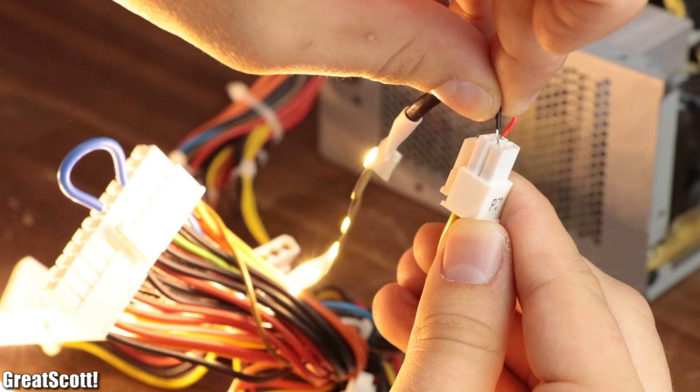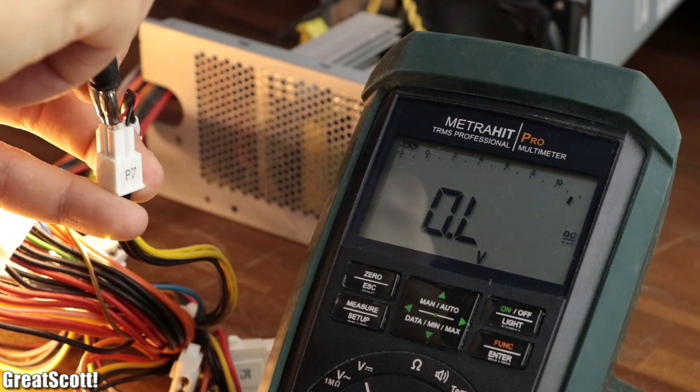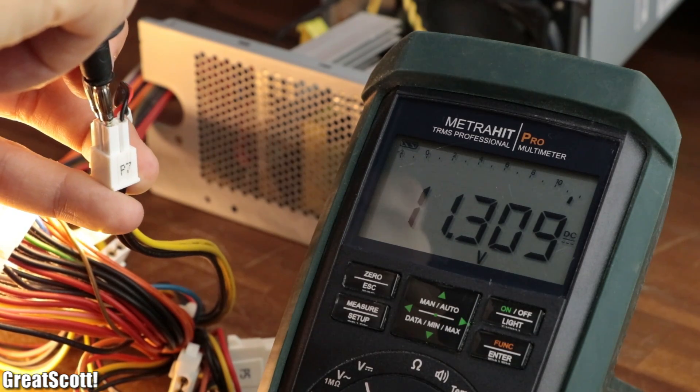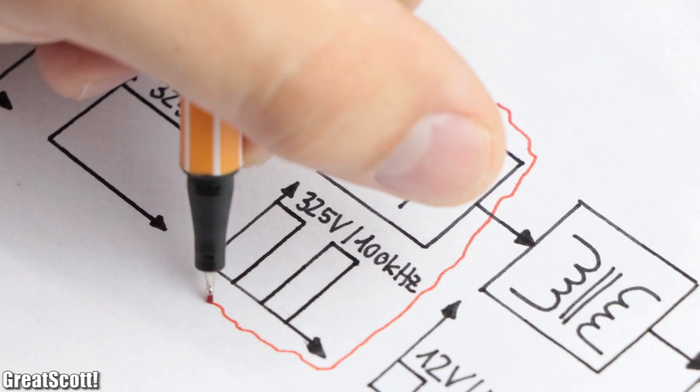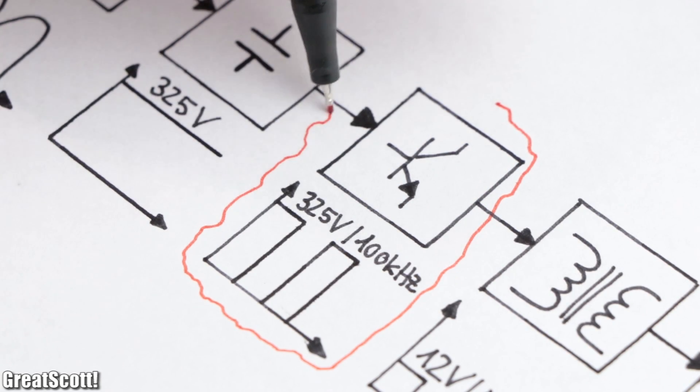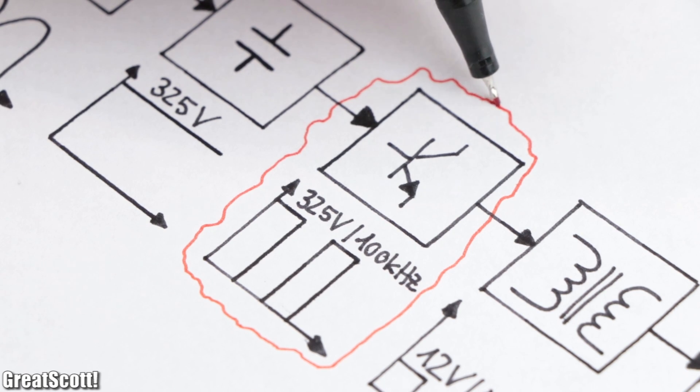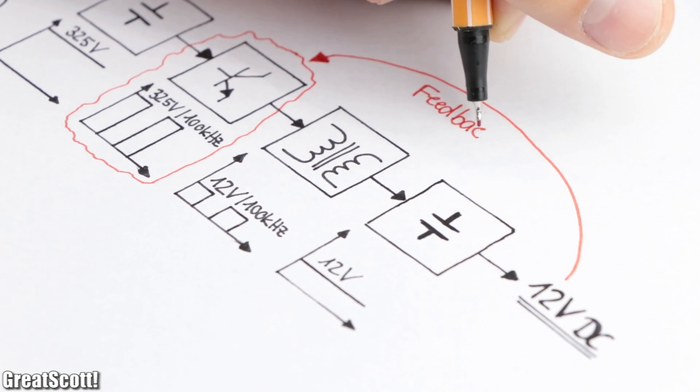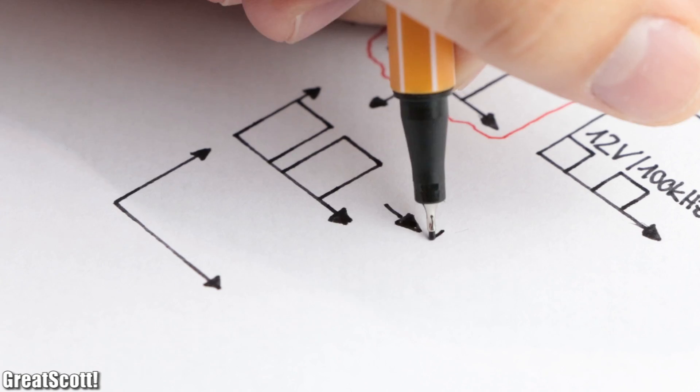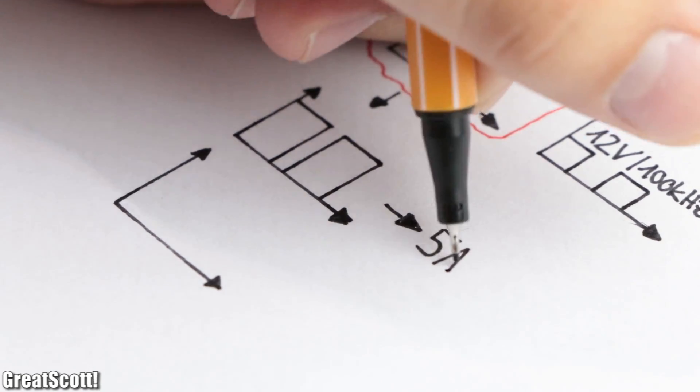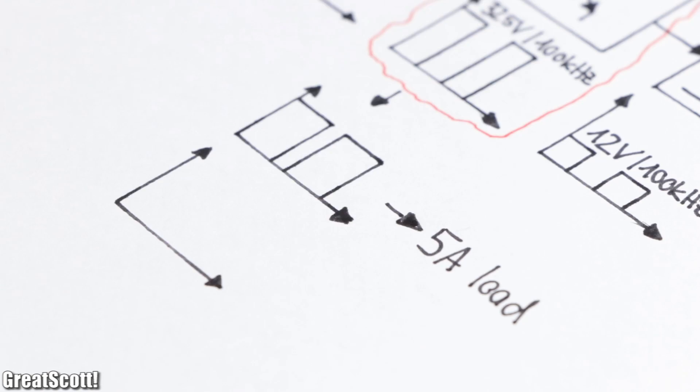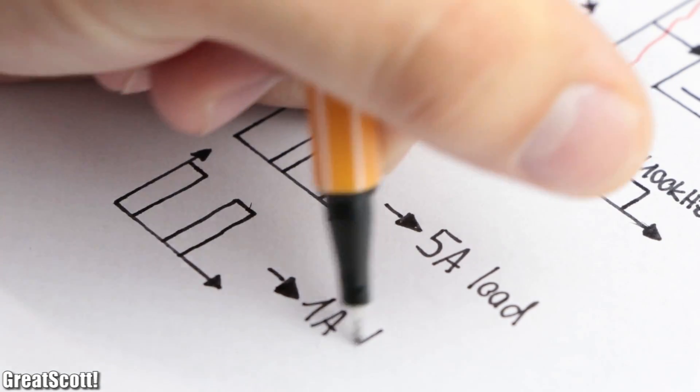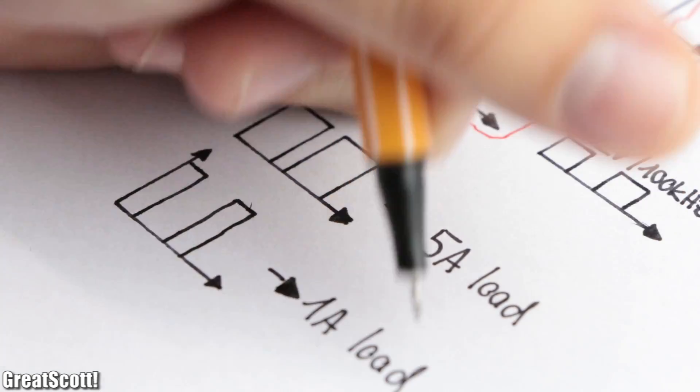And if we connect different loads to this 12 volt output, we can see that the voltage stays pretty much constant no matter how much current we draw from it. That means that if we go back to the switching transistor part of the circuit, there has to be some kind of feedback from the 12 volt output, which tells the transistor to increase the duty cycle of the PWM signal if we draw more current, because we need more energy on the output side to sustain the 12 volts.